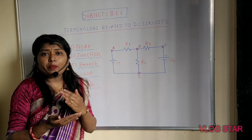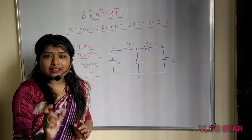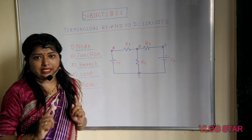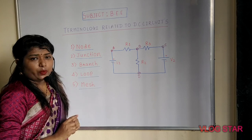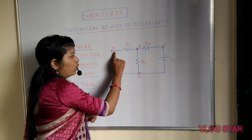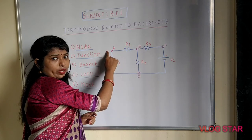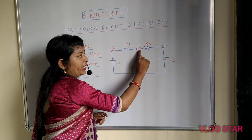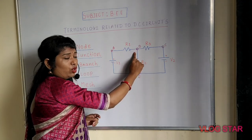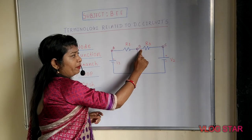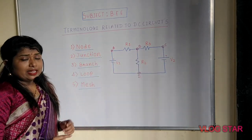The fourth term is loop. Loop is any closed path in the circuit. The first loop is A-B-D back to A, the second loop is B-C-D back to B, and the third loop is A-B-C-D back to A. So there are three loops in this circuit.